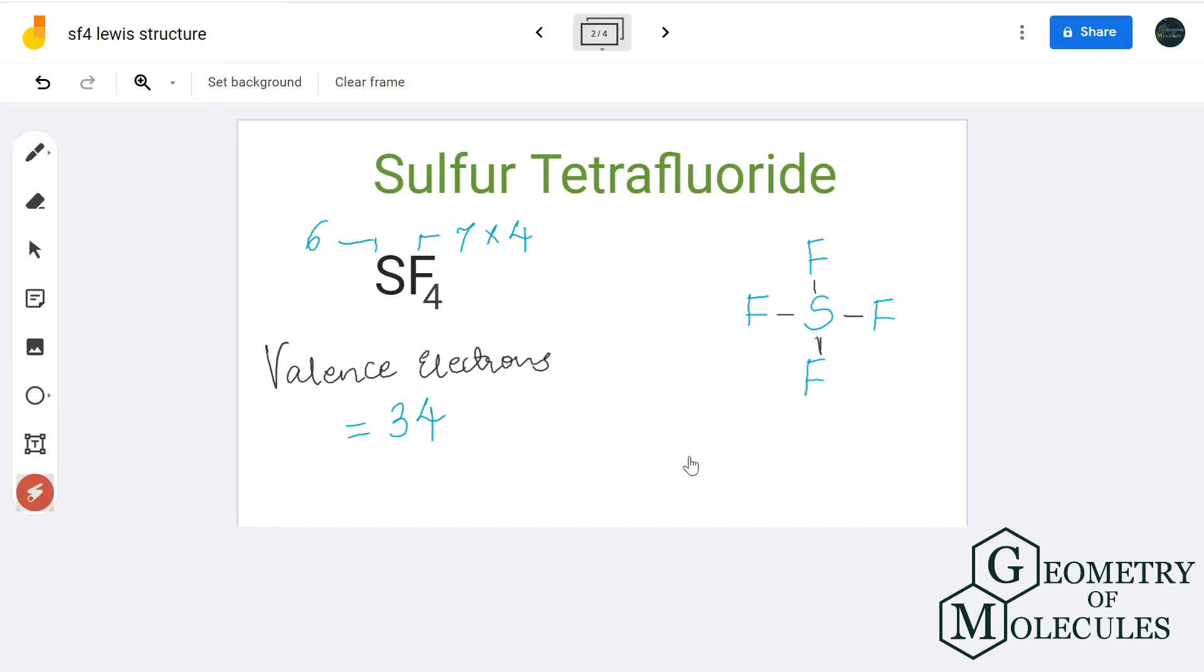For drawing the Lewis structure, let's put the sulfur atom in the center as it is the least electronegative atom. Once you've done that, put all four fluorine atoms around it like this. Now let's show bonds between fluorine and sulfur.